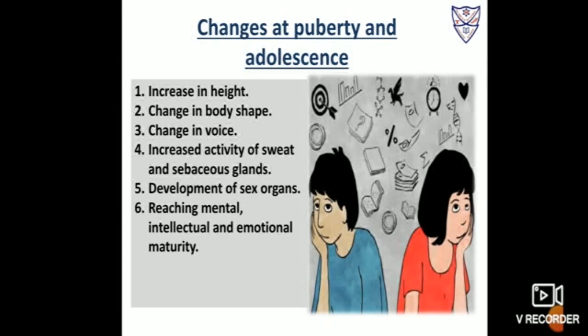Let us discuss about changes at puberty and adolescence. The changes that take place during the adolescence period are: increase in height, change in body shape, change in voice, increased activity of sweat and sebaceous glands, development of sex organs, and reaching mental, intellectual, and emotional maturity.